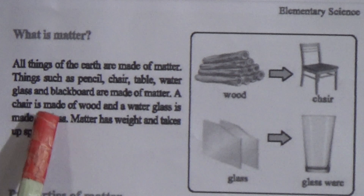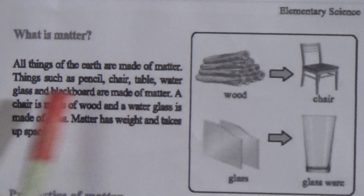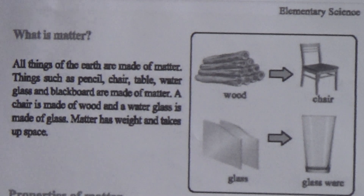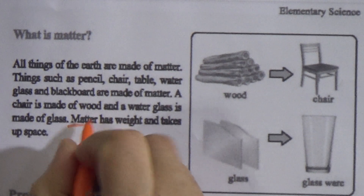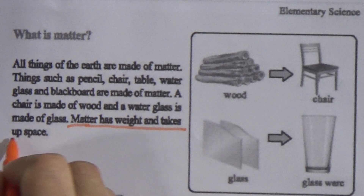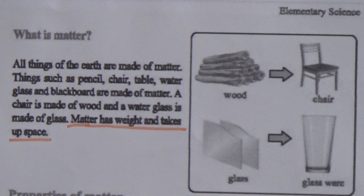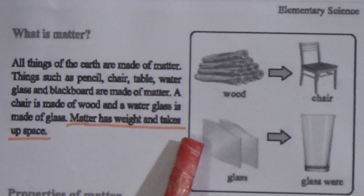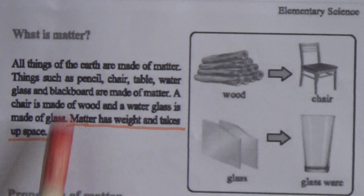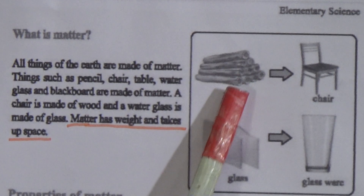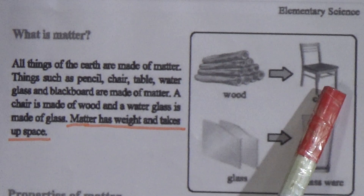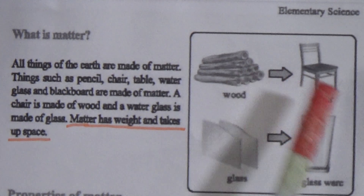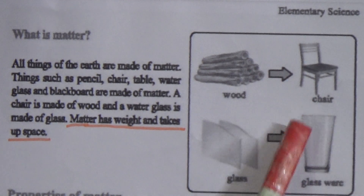A chair is made of wood and a water glass is made of glass. Matter has weight and takes up space. Underline this line — this is very important. You have to memorize: matter has weight and takes up space. This is the figure of wood and chair — we know a chair is made of wood. This is a water glass, also made of glass. These figures are all examples of matter.